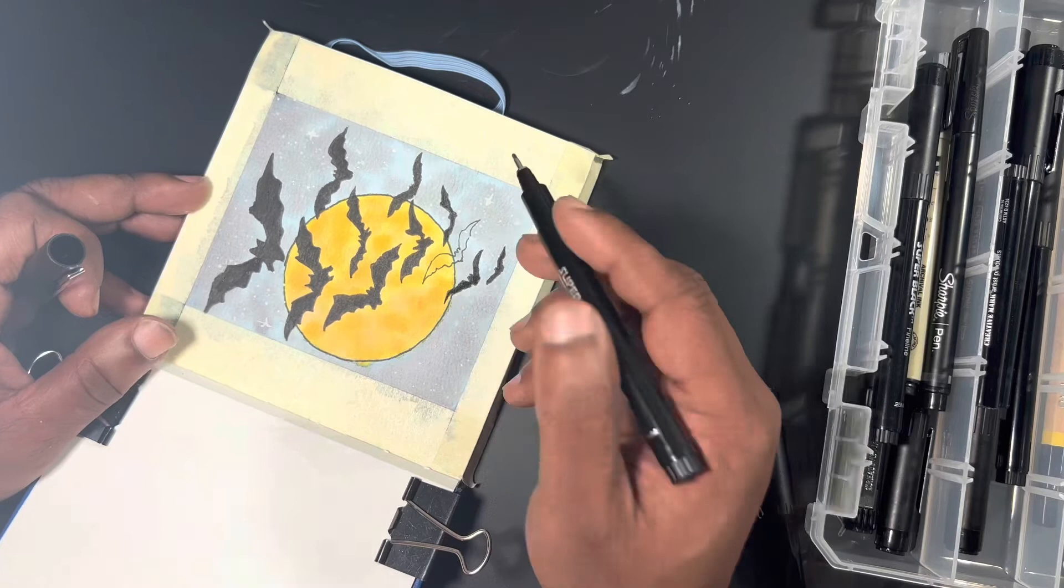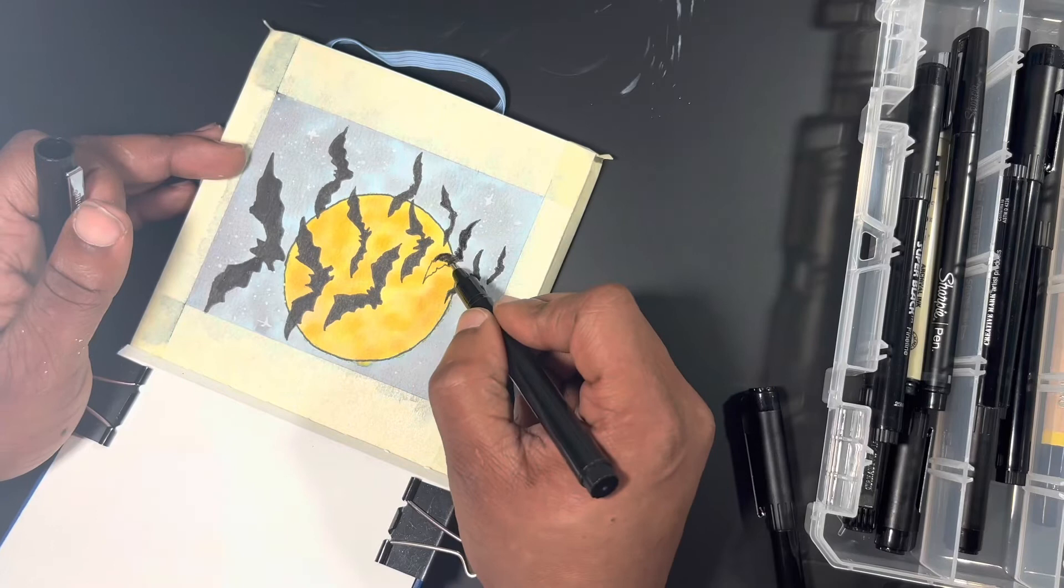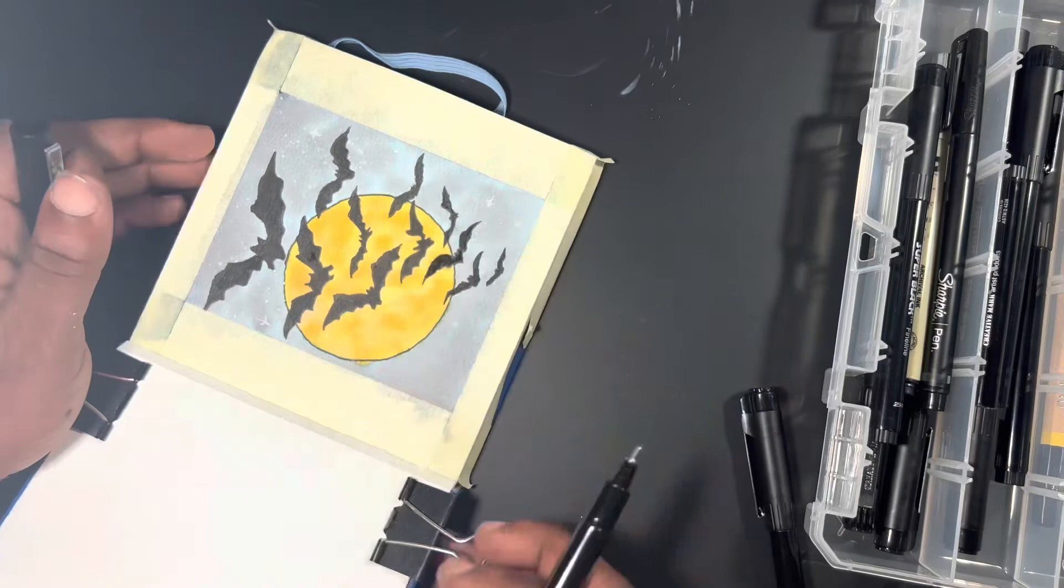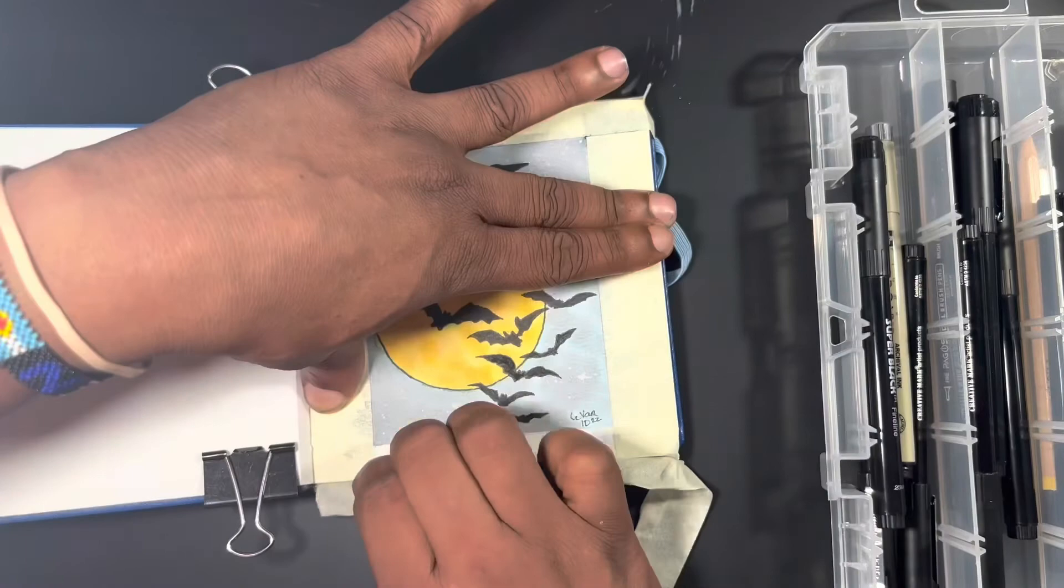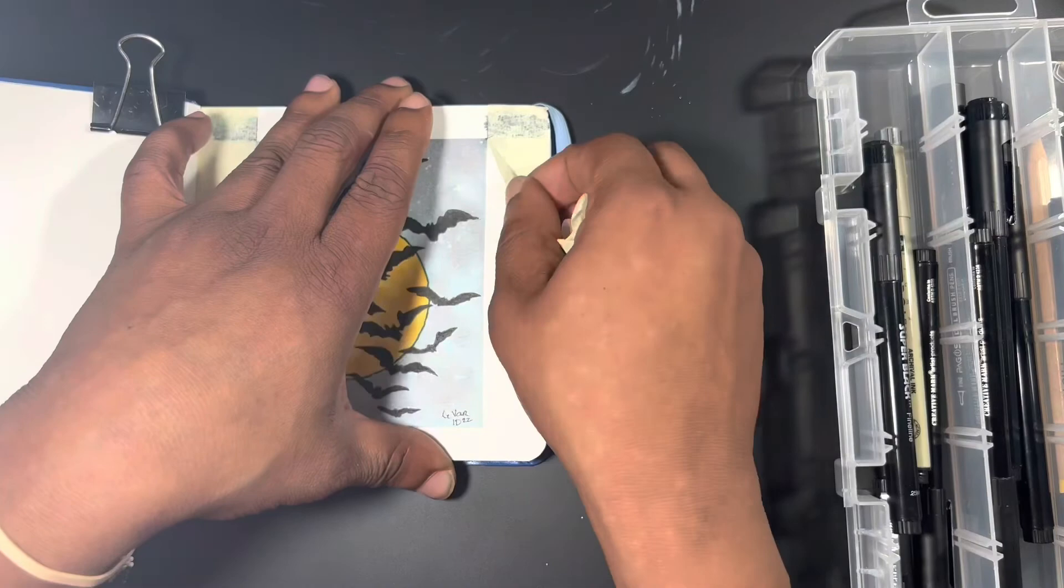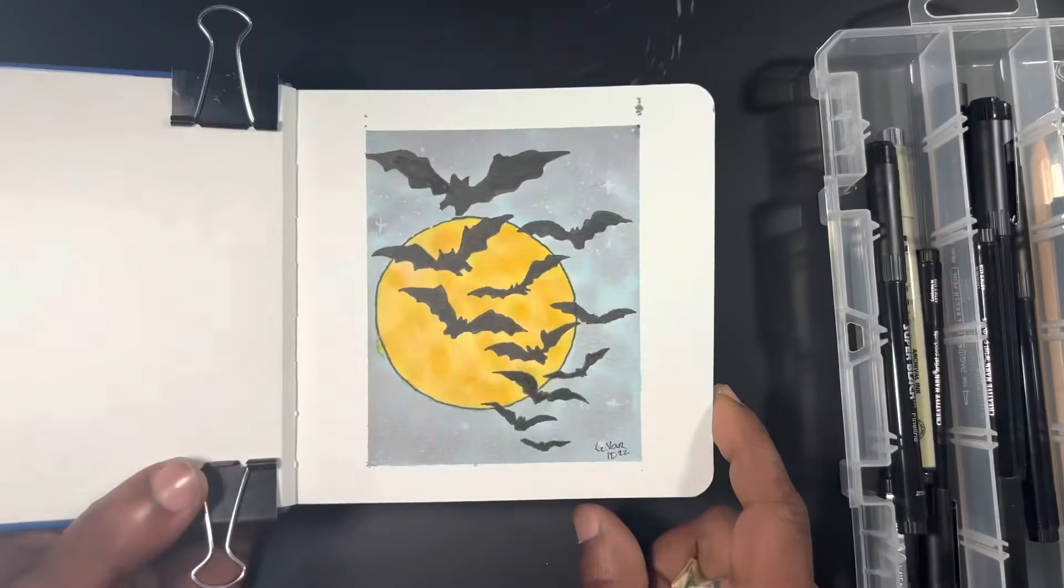This paper that I'm using is the Recollections 5.5 by 5.5, 140 pound cold-pressed watercolor journal. This is what I'm using for all of my Inktober sketches, and I will be doing a review of this little journal along with the flip through at the end of the month. If you like what you saw, don't forget to give the video a thumbs up. Remember to comment and share, follow us on Instagram as well as the Facebook page. Remember, as I tell you always, just keep painting.